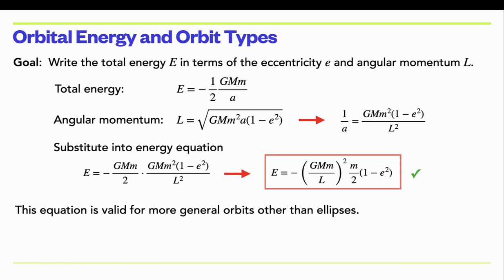Previously I said that the total energy only depends on the semi-major axis — that's true. But you can also write it in terms of angular momentum and eccentricity, because angular momentum depends on eccentricity. If we want to write the total energy in terms of both eccentricity and angular momentum, it turns out there's an advantage for doing that — for classifying different kinds of orbits. The total energy is what we derived a few slides ago, and here's an expression for the angular momentum, which does depend on the semi-major axis.